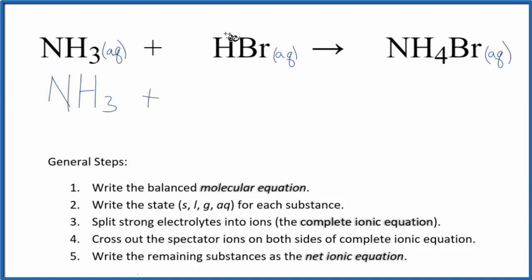Hydrobromic acid, though, that's a strong acid. So it's a strong electrolyte. We'll split it up. Hydrogen group 1, 1 plus ionic charge. Bromine, that forms 1 minus ions. So we have H plus, plus the bromide ion, Br minus. And those are the reactants.